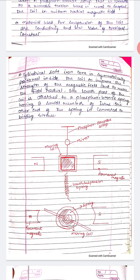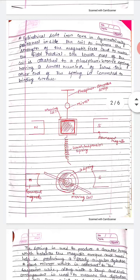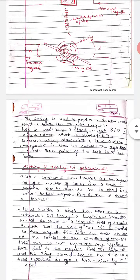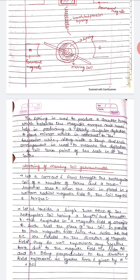The lower part of the coil is attached to a phosphorus bronze spring having a small number of turns, and the other end of the spring is connected to the binding screw. In the diagram you can see the mirror, moving coil, magnetic field (N and S poles), lower suspension spring, and the permanent magnet. The spring is used to produce a counter torque.